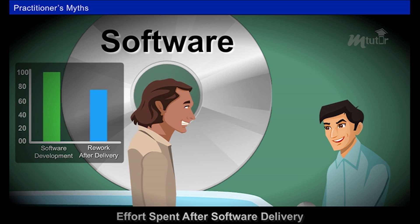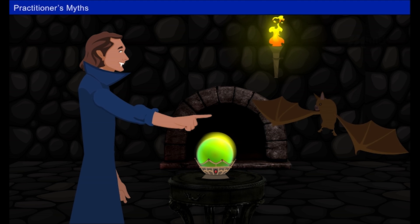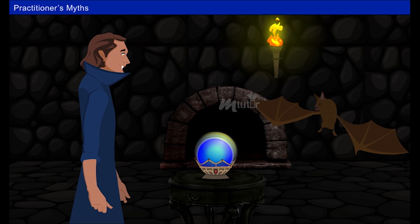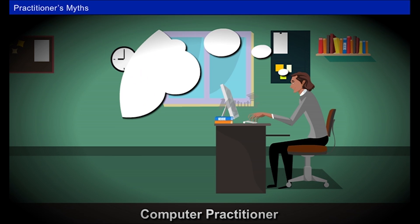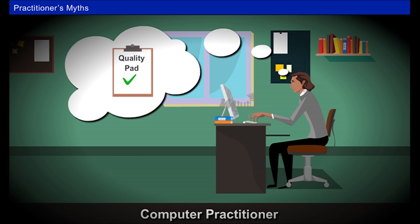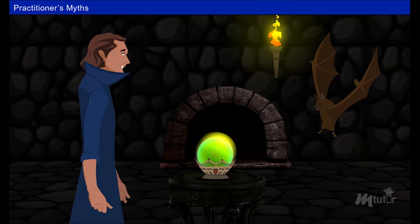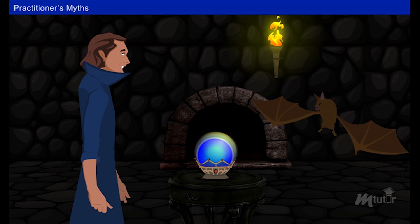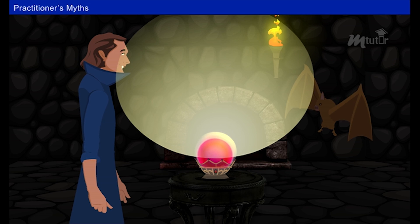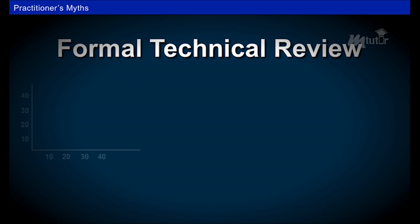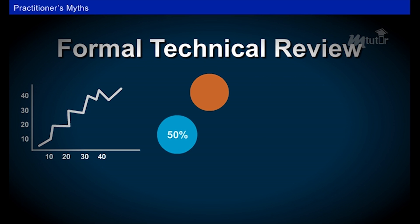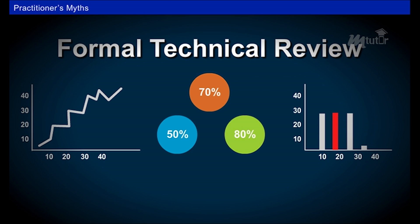Is it like that? Okay, now listen to this. The manager is insisting me to produce quality software. But how can I check the quality without running the software? Your majesty, you are wrong. I can suggest you to use the concept of formal technical review, which is a quality filter that is applied at each stage of the software development.